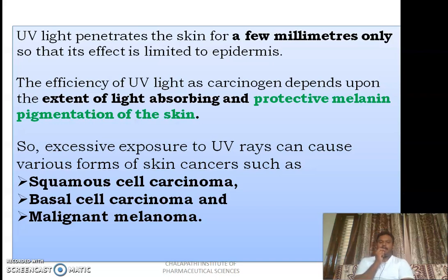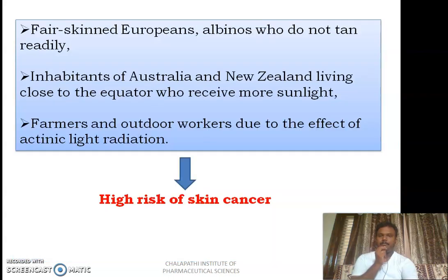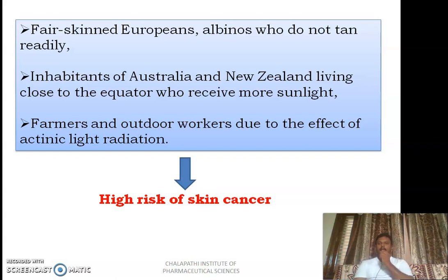Excessive exposure to UV rays can cause various forms of skin cancers such as squamous cell carcinoma, basal cell carcinoma, and malignant melanoma. Fair skinned Europeans and albinos — those individuals suffering from albinism and those who do not tan readily — will be at greater risk of developing skin cancer. Inhabitants of Australia, New Zealand, and those living closer to the equator receive more sunlight and thus more UV radiation.